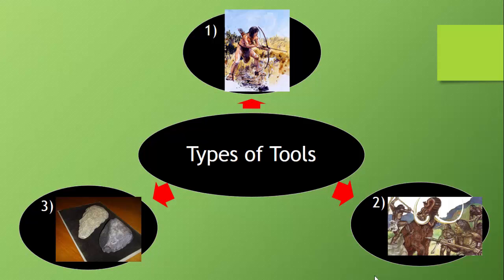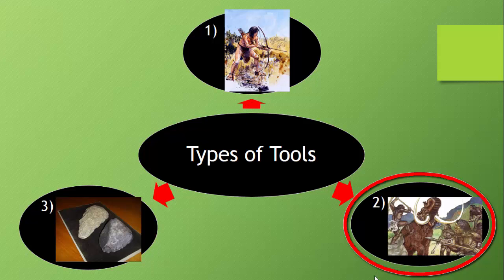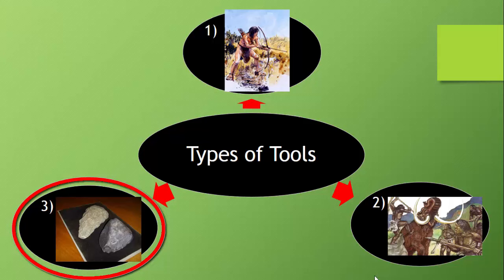Bubble number one shows a bow and arrow — they used this to hunt animals from a distance. Bubble number two is a spear. They would throw these at animals from a long distance, or as you see in the image, once an animal had been attacked and was close to dying, they would come in with the spears for a final kill. And bubble number three: they used choppers to cut, chop, and scrape bones and meat.